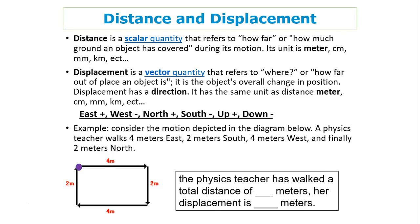The direction of displacement can be either positive or negative since we are only doing one-dimensional motion. Usually, east is positive and west is negative. Similarly, north is positive, south is negative, up is positive, and down is negative.